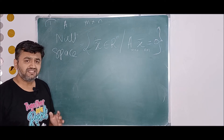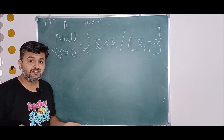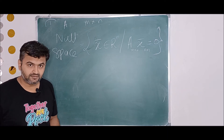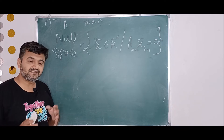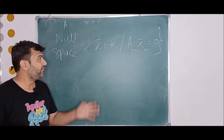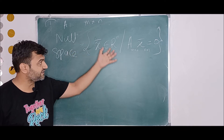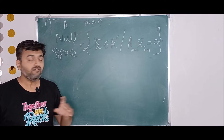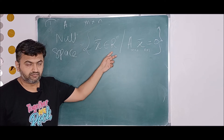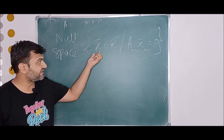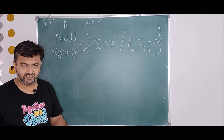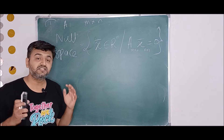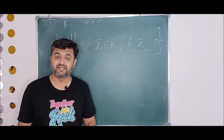Why do we call it a null space rather than a null set or solution set? Because this collection of vectors forms a subspace of R^n. I am taking vectors from R^n, so it is a subset of R^n, and it forms a subspace.